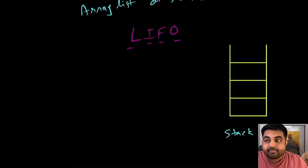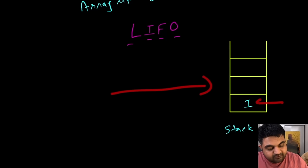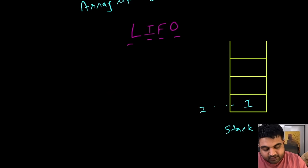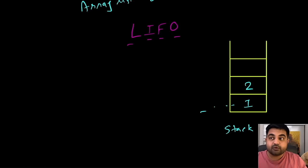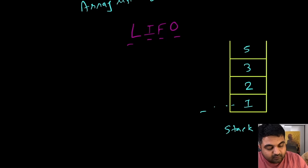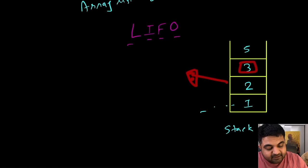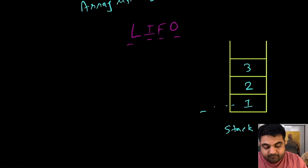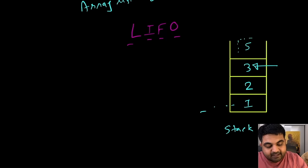Let's say we have an empty stack. If we try to add value number one, it goes to the bottom. If we add value number two, it comes on top of one. Then we add three, then five. Now the moment we decide to get one element out of the stack, we cannot directly access elements three, two, or one — we must always access element five first. Once we pop element five out, only then can we reach element three. The last value entered inside the stack remains at the top, and that is the only value we can access at any given moment.